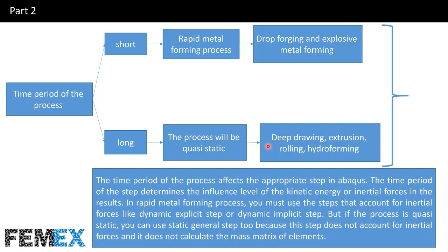The time period of the process affects the appropriate step in Abaqus. The time period of the step determines the influence level of kinetic energy or inertial forces in the results. In rapid metal forming processes, you must use steps that account for inertial forces, like the dynamic explicit step or dynamic implicit step. But if the process is quasi-static, you can use the static general step too, because this step does not account for inertial forces and does not calculate the mass matrix of elements.